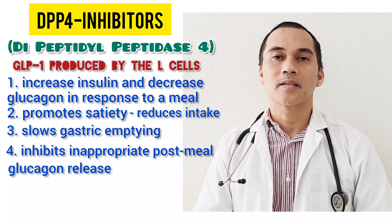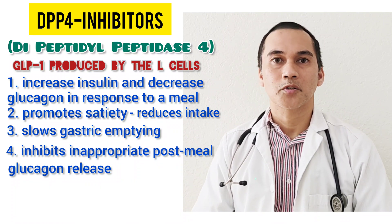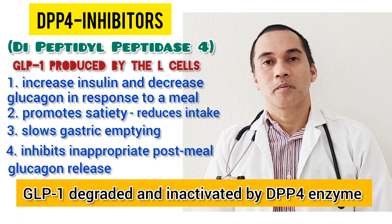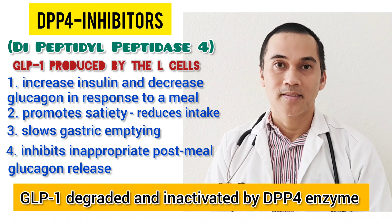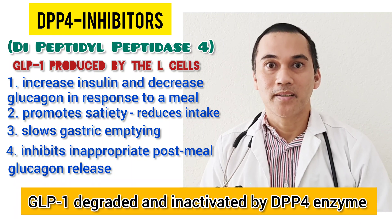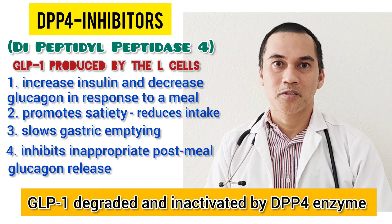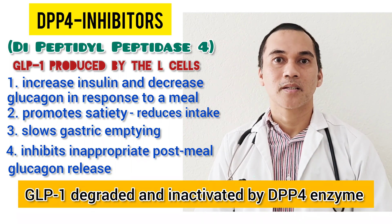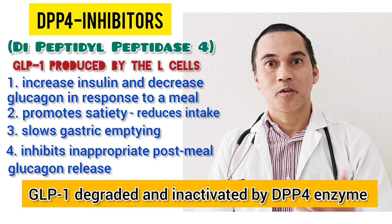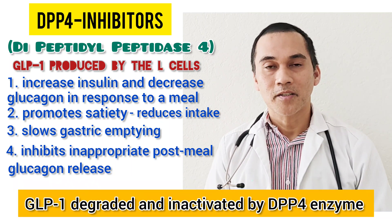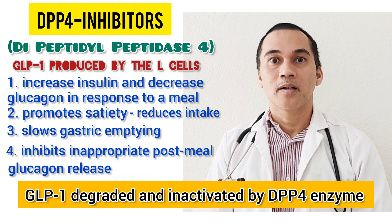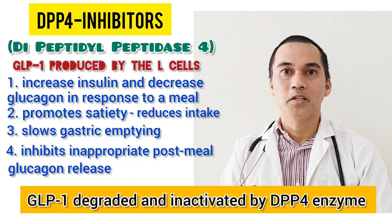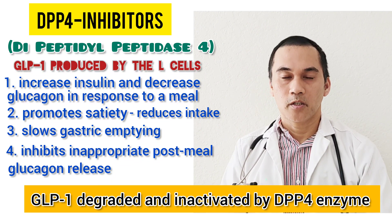But this incretin has a short life because the DPP-4 enzyme — the dipeptidyl peptidase-4 enzyme — will inactivate this GLP-1 within minutes. The half-life for the endogenous GLP-1 is between 1 to 2 minutes. So once it's released, after a few minutes it is inactivated and cannot lower your blood sugar. If you are not diabetic it doesn't matter much, but if you are diabetic your blood sugar will increase. These inhibitors inhibit the inactivation or degradation of GLP-1.